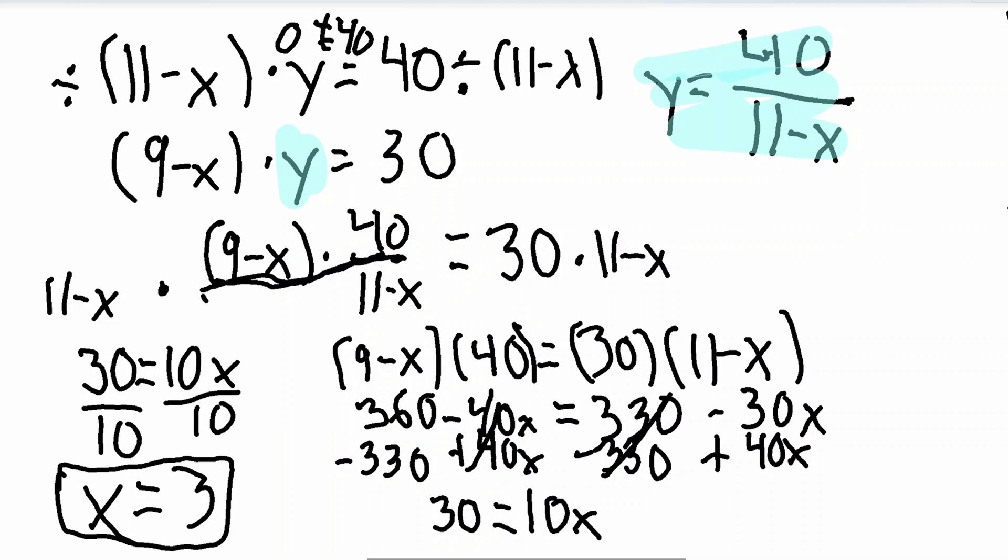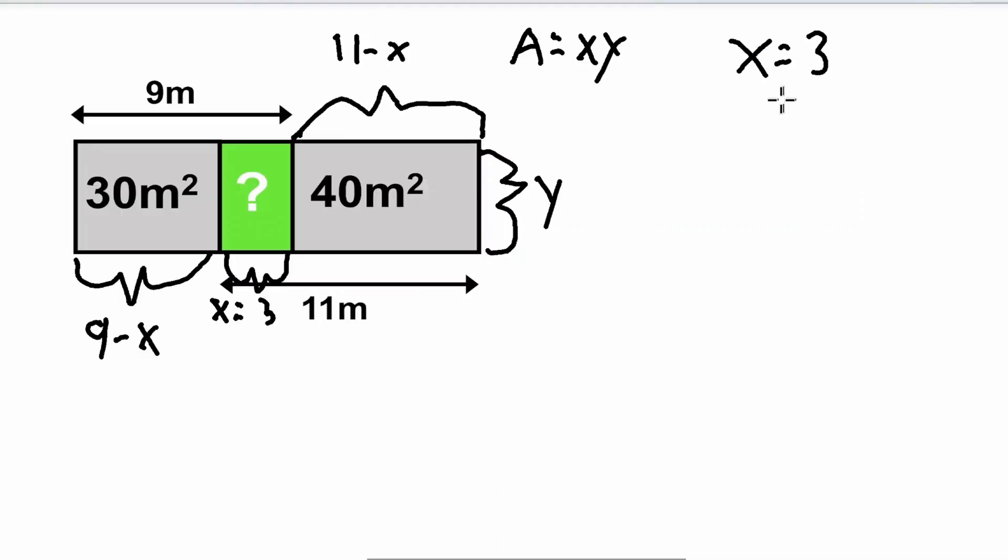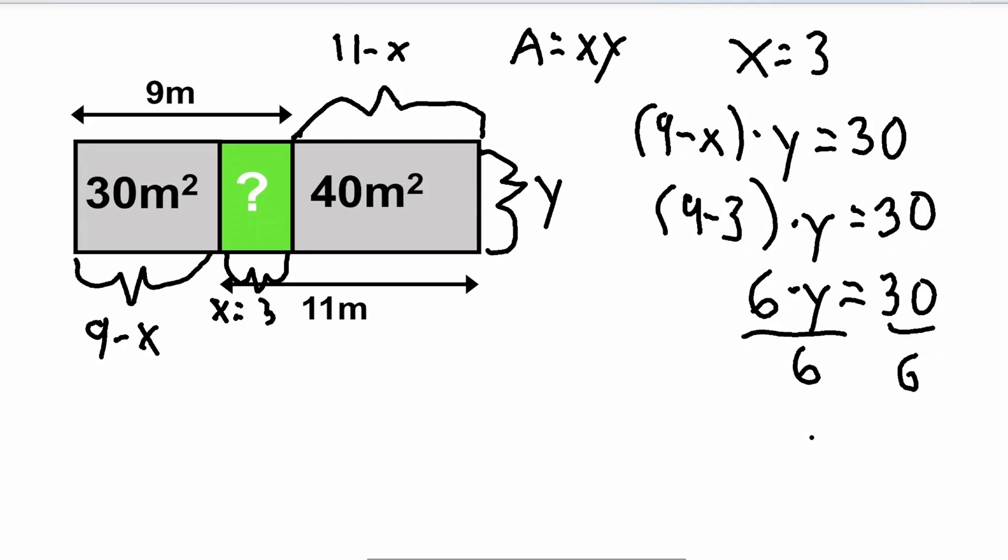So now we have found the x value, so the one side length for our rectangle that we're trying to find, and now we're going to try to find the second value. So now, as you can see, we have x solved already, which is 3. Now we just need to solve for y. So to solve for y, we can use any one of these two equations to get the area of either one of these rectangles. So I'm going to use the left one, 30 meters squared, but you can use either, you could also use this one. So to find the area for the 30 meters squared, if you remember, it was 9 minus x times y is equal to 30. We have a value for x, so I'll make that 9 minus 3 times y is equal to 30. 9 minus 3, of course, is 6 times y is equal to 30. Now just divide it all by 6 to get y by itself. 30 divided by 6 is 5.